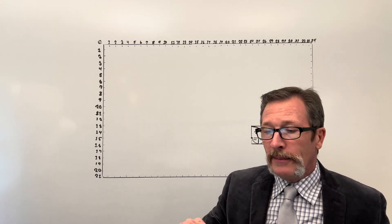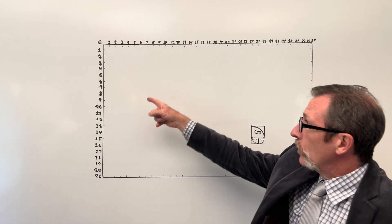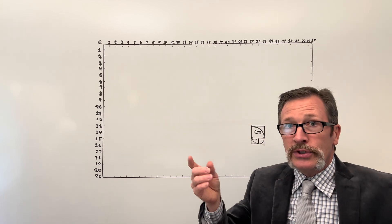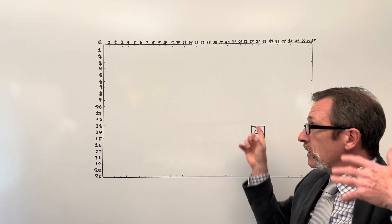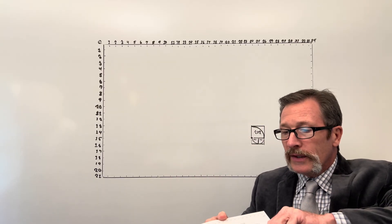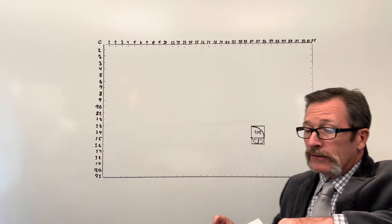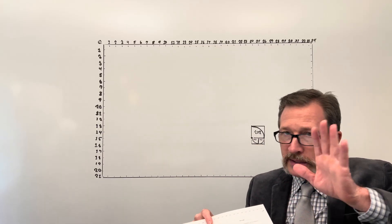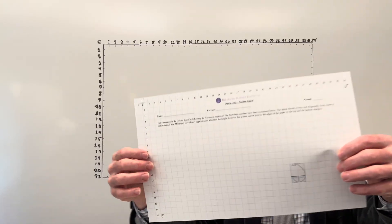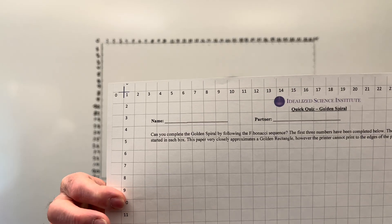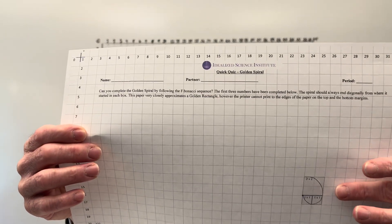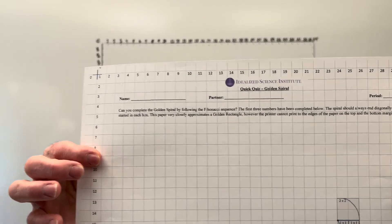I'll hold this paper up in a second, but I have a larger version of this on the board here. What we're trying to figure out is: can your students draw this spiral out following Fibonacci? I'll hold this up — I've already started the pattern for you to help you along because it's way too difficult to know where to start. I'll put it close first and then I'll move it back. Here is our starting point right down here; I've done the first three numbers for us.